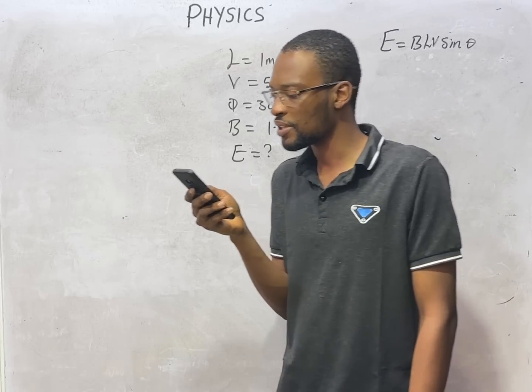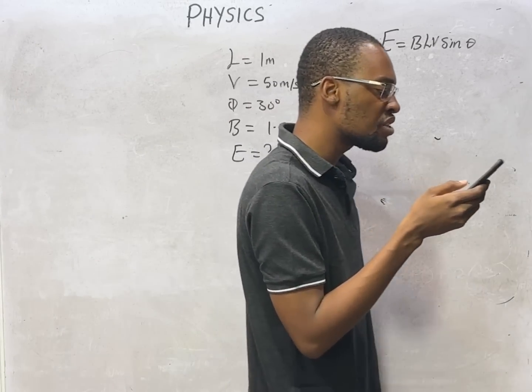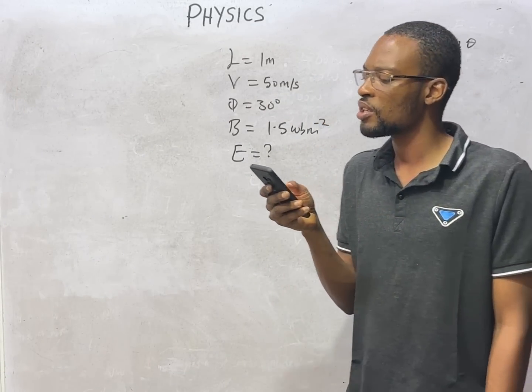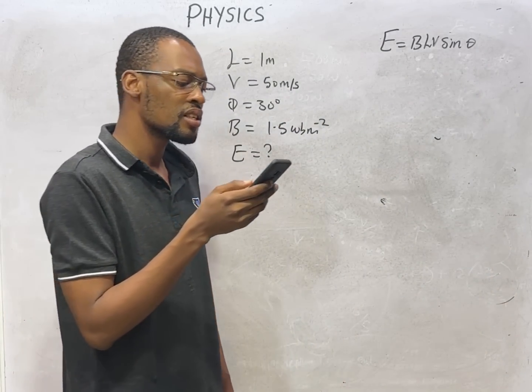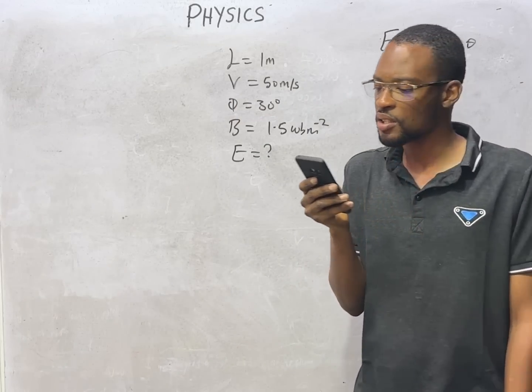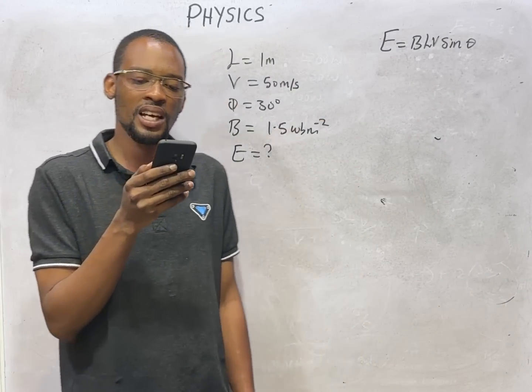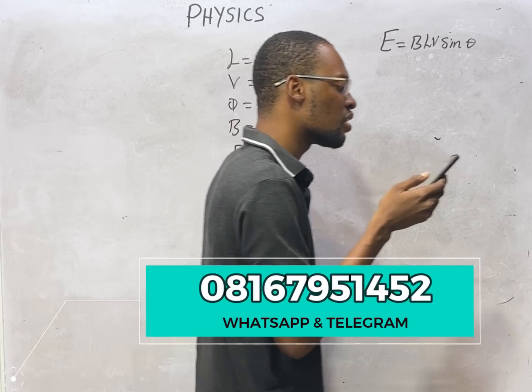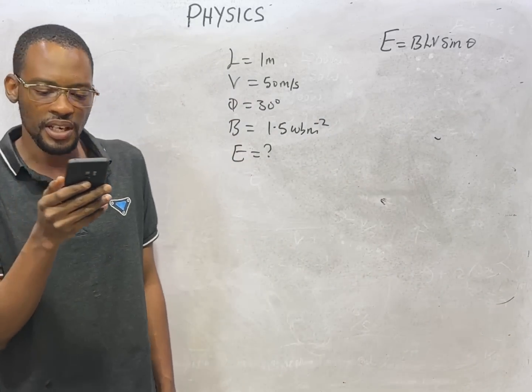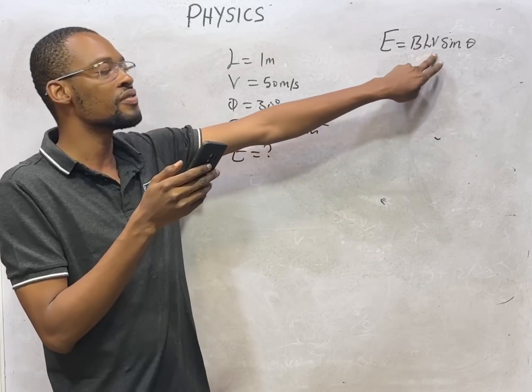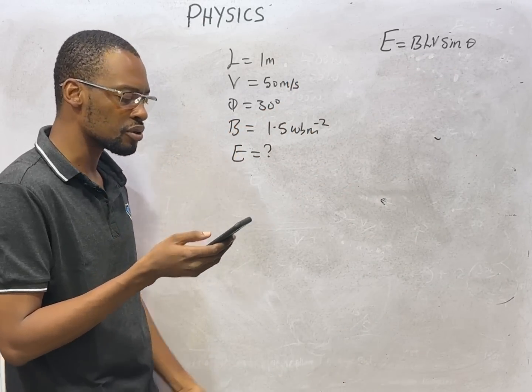So while looking at this, I am doing revision: the point at which the resultant magnetic flux density is zero is called the neutral point, and the most efficient way of demagnetizing a magnet is electrical method. Now, if a conductor of length 1 meter moves with a velocity of 50 meters per second at an angle of 30 degrees to the direction of a uniform magnetic field of flux density 1.5 Weber per meter squared, the EMF induced is BLV sin θ. Substituting the values given, we get 37.5 volts.